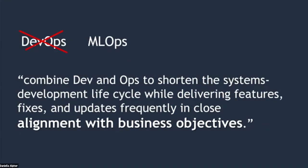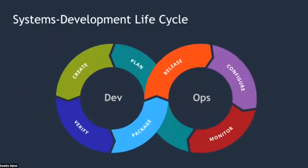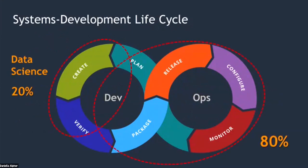MLOps is exactly the same, so there's no big difference. If we look into DevOps, this is the usual lifecycle where you define some plans, create some stuff, then you test, verify, release, package, and all that. If we try to apply it to data science, data science is just the create, maybe some planning, some research, maybe some verification at a small scale. And there's 80% of other stuff that needs to be done by someone.